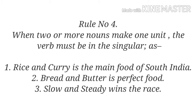Rule number four: when two or more nouns make one unit, the verb must be in the singular. Example one: 'Rice and curry is the main food of South India' — rice and curry make one unit, so it requires the singular verb 'is'. Example two: 'Bread and butter is perfect food' — bread and butter is a combination considered as the same, so it requires the singular verb 'is'. Example three: 'Slow and steady wins the race' — slow and steady as a single unit refers to the same idea, so it requires the singular verb 'wins'.